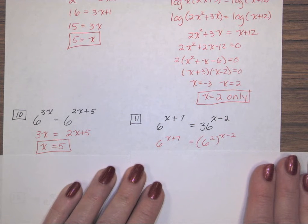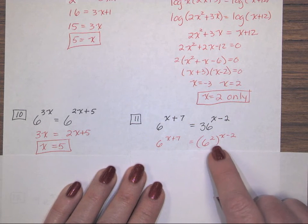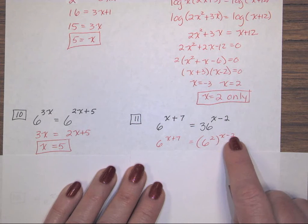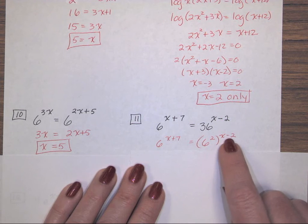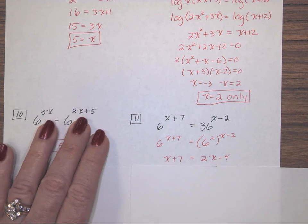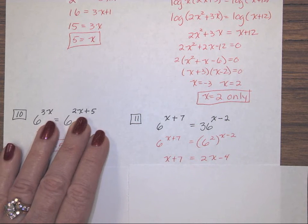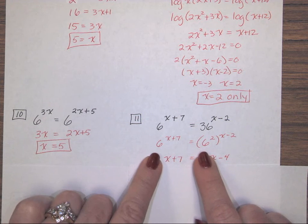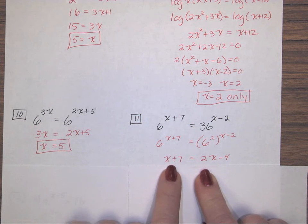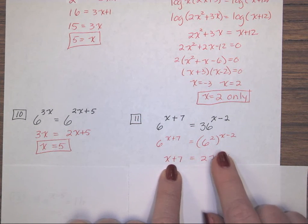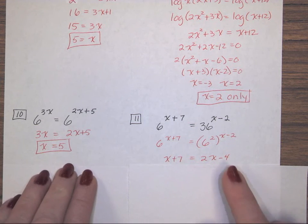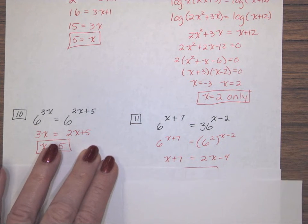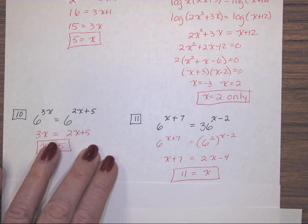Next, when you have a power raised to a power, you multiply those exponents. So, I'm multiplying a monomial by a binomial. It has to be distributed over both terms. And then, I took log base 6 of both sides. It left me with this exponent, x plus 7, and this one was 2x minus 4. Combine like terms and solve, and you get 11.